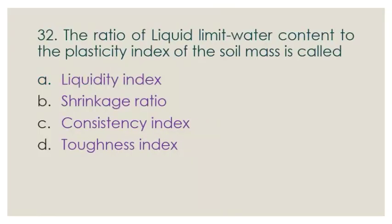Question number 32: The ratio of liquid limit minus water content to the plasticity index of the soil mass is called — options: a) liquidity index, b) shrinkage ratio, c) consistency index, d) toughness index.